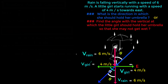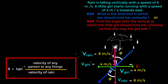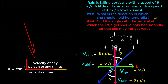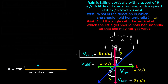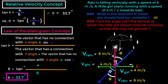Now we will learn the super shortcut formula to solve this type of problem for MCQ and admission tests. The super shortcut formula is: θ = tan⁻¹ (velocity of any person or thing / velocity of rain). The girl's velocity is 4 m/s and rain's velocity is 6 m/s, so θ = tan⁻¹(4/6) = 33.7 degrees. This is our answer — the same result obtained by all three methods.